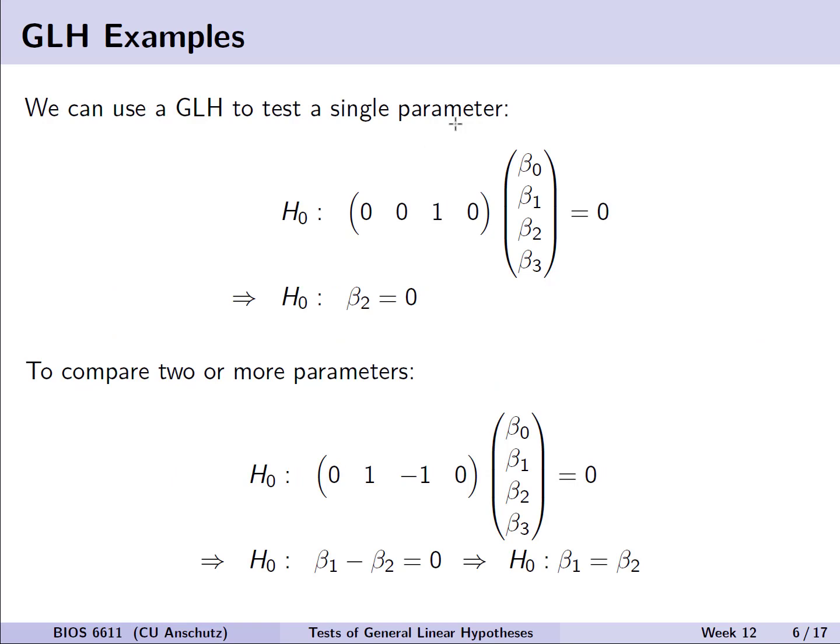Let's look at a few of these examples. We can use the general linear hypothesis framework to test just a single parameter. For example, if we're only interested in testing beta 2 equal to 0, we would set our matrix C to actually just be a row vector, where it's 0, 0, 1 for beta 2, and then 0 for beta 3. Multiply that by our vector of betas, and we set that equal to our D vector, which in this case is a single value just 0, which really is just the hypothesis that beta 2 equals 0.